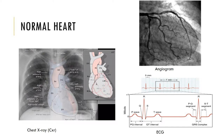The anterior view of the heart illustrates the borders of the heart. The base forms the superior border. The right border is formed by the right atrium. The left border is formed by the left ventricle and a small portion of the left atrium. The inferior border is formed mainly by the inferior wall of the right ventricle. We will also relate heart anatomy to physiology, including the EKG shown in the figure.